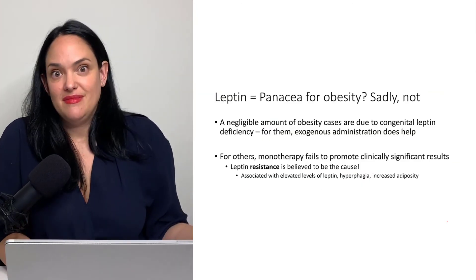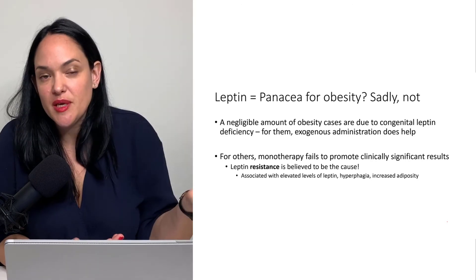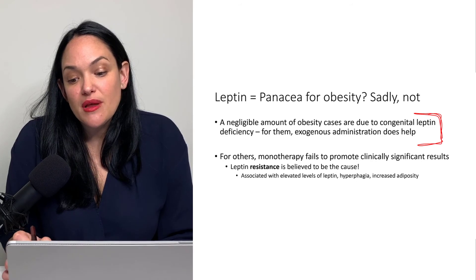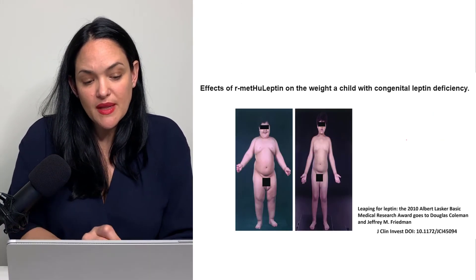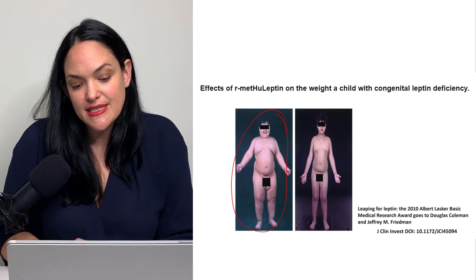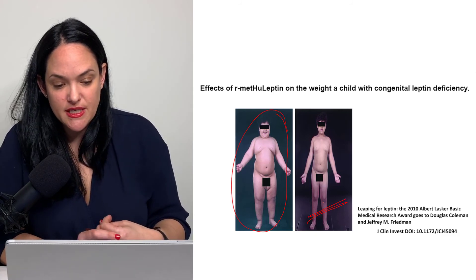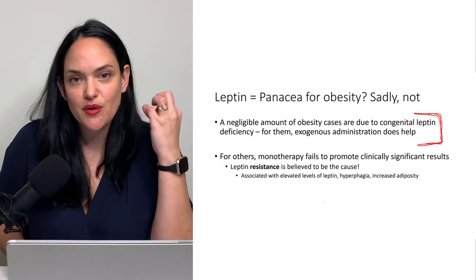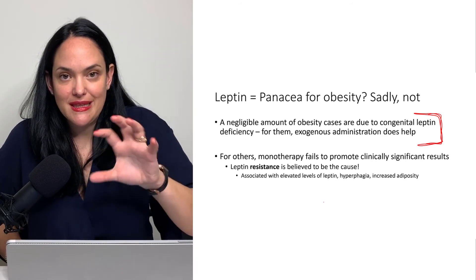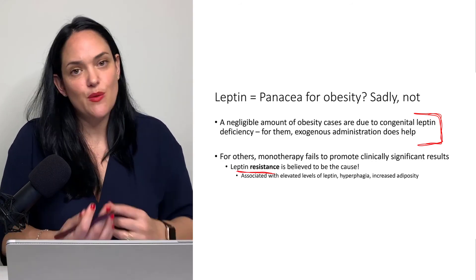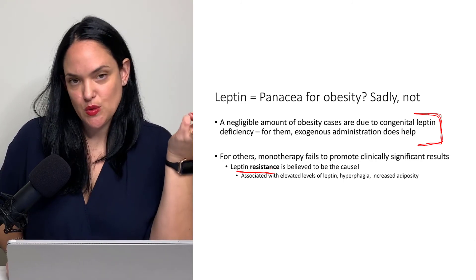So leptin must be the solution for obesity then — why not just give people more leptin to help them eat less? Really, a negligible amount of cases of obesity are associated with leptin deficiency where it's not being made. In those cases, individuals born with congenital leptin deficiency, yes, if we administer exogenous leptin, we do see quite a quick reduction in food intake and reduction in adiposity. However, when I say negligible, I mean we don't even have data on it — the percentage is so low. The majority of obesity cases linked with leptin issues involve leptin resistance. We don't fully understand how leptin resistance develops, just as we don't fully understand how insulin resistance develops, but we know that's one of the main links.